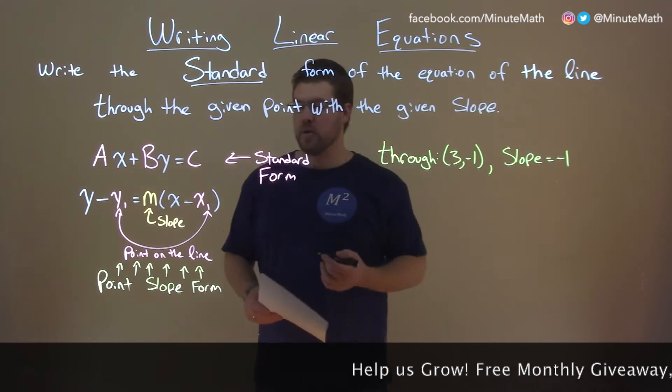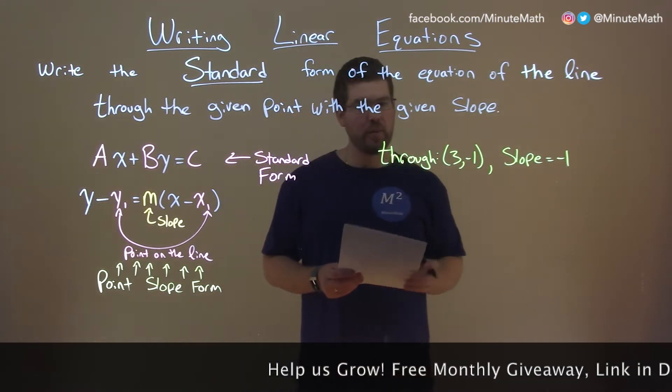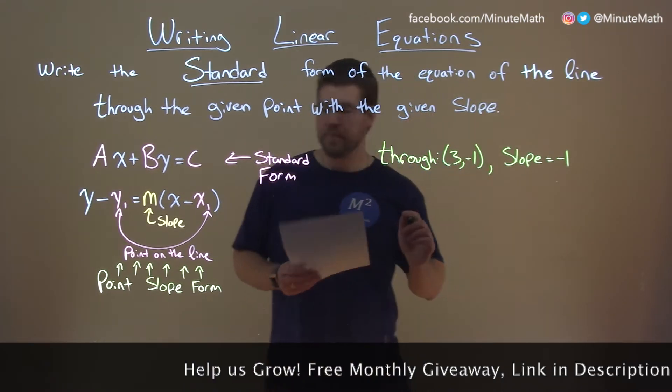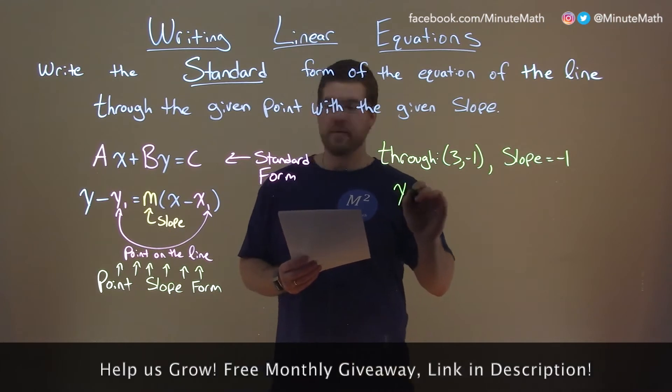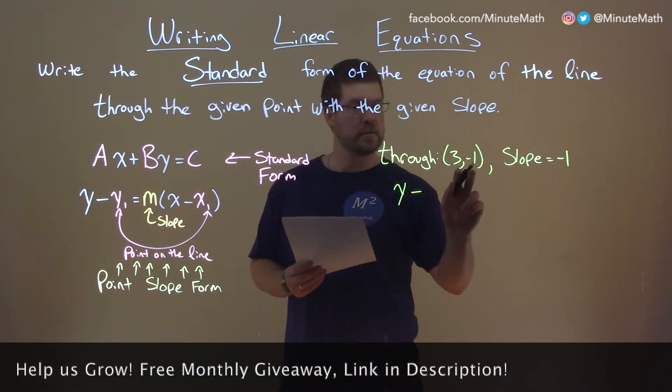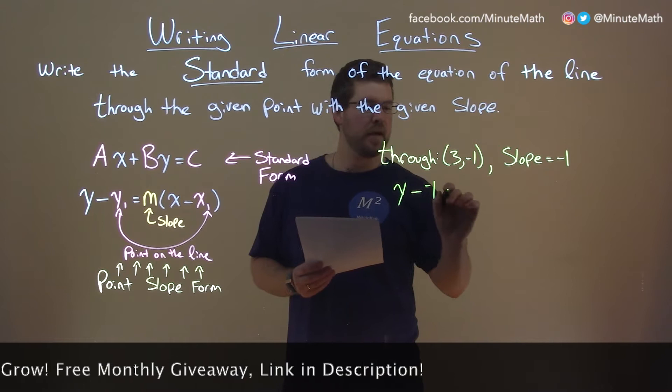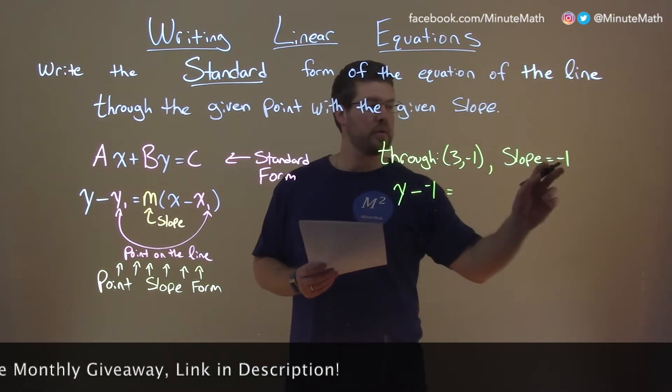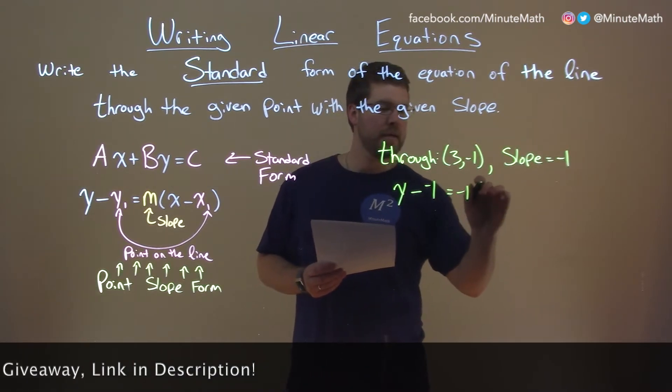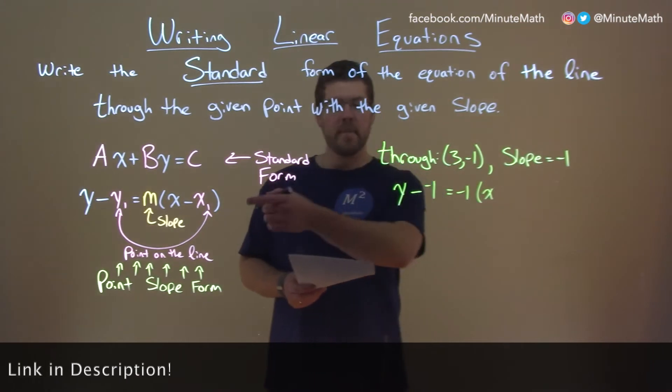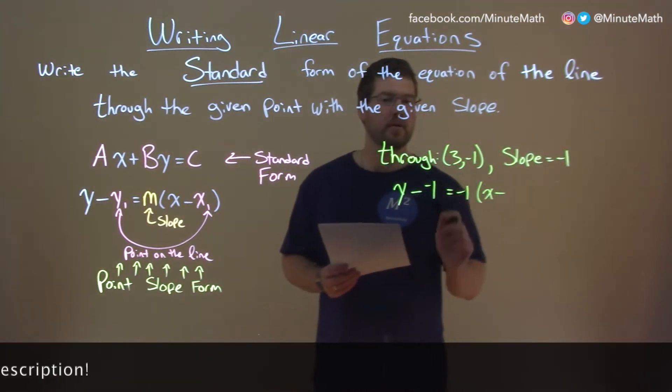I'm going to first start with our point-slope form and fill in these values here. So we have y minus our y1, which is the coordinate here, negative 1, equals our slope - they told us it's negative 1 here - times (x minus x1), which is 3.